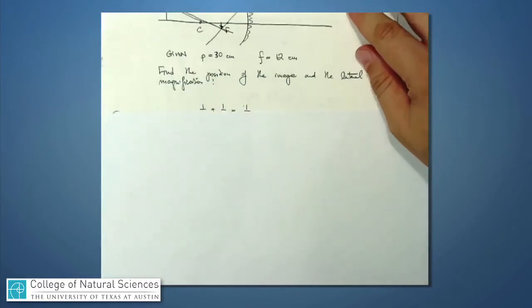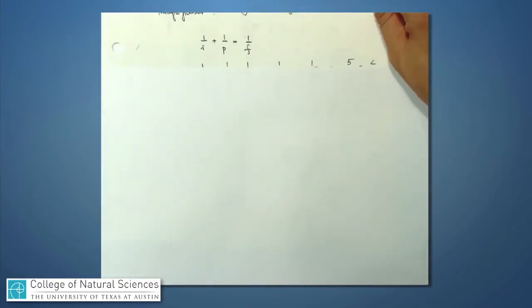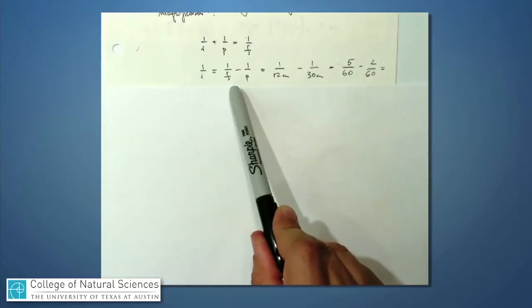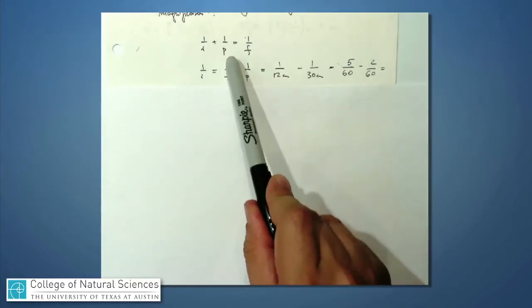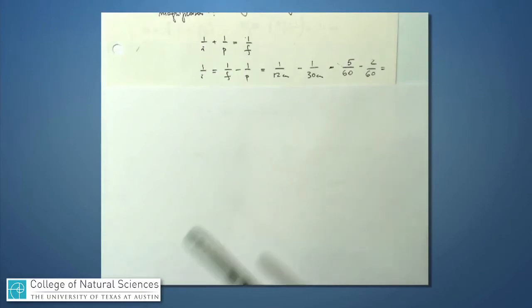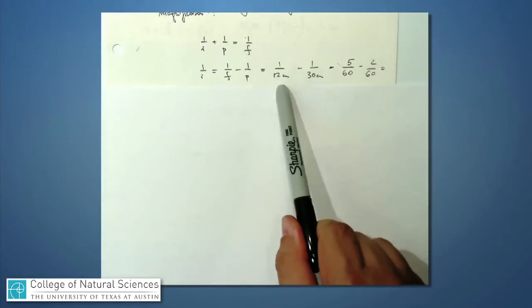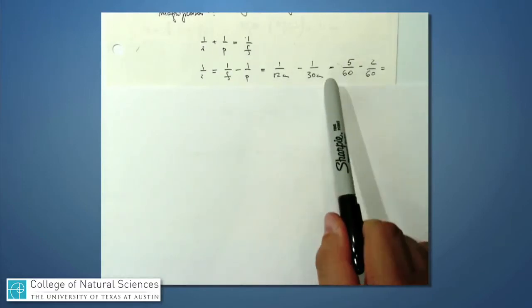So if I go to our expression, 1 over i plus 1 over p is equal to 1 over f, or 1 over i is 1 over f minus 1 over p. I just brought the 1 over p over to the other side. I can now start plugging in some numbers. It's 1 over 12 centimeters minus 1 over 30 centimeters.